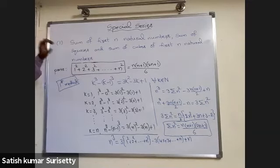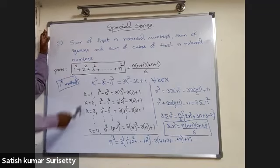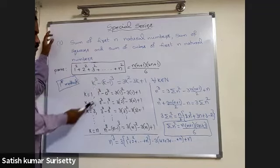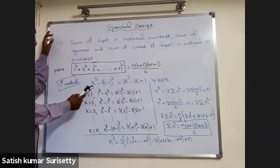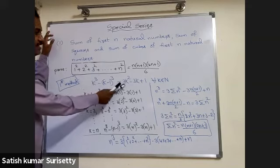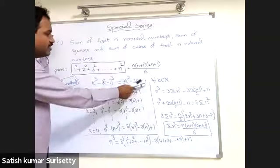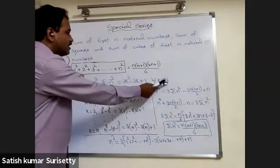So the second method used before is applicable. Consider k cubed minus k minus 1 whole cubed — that is the difference of two consecutive cubes. When simplified, this gives 3k squared minus 3k plus 1, which is true for all k belonging to the natural numbers.